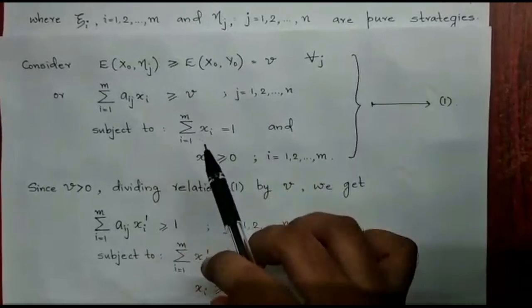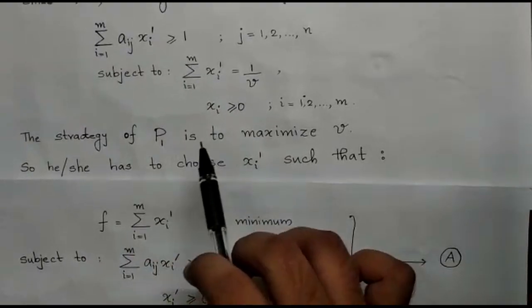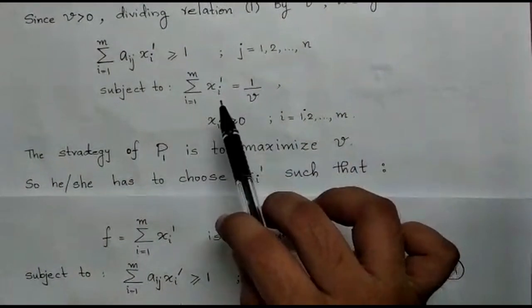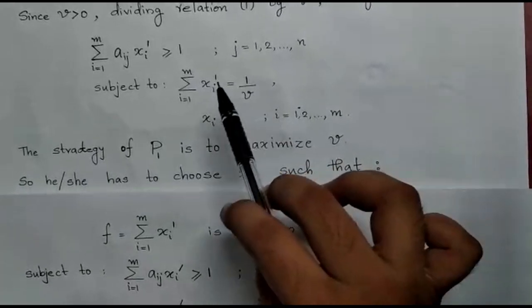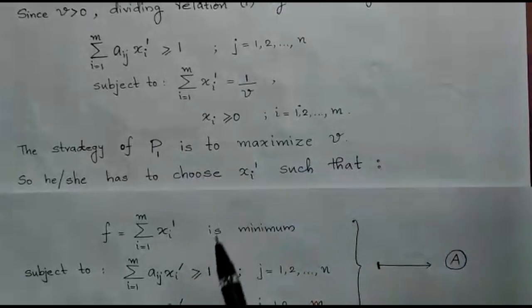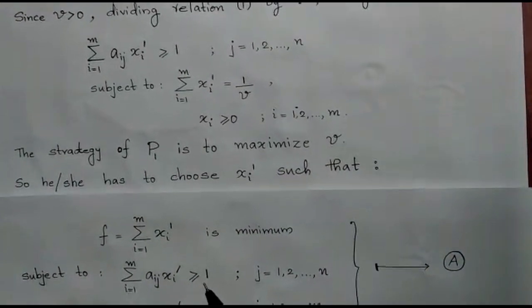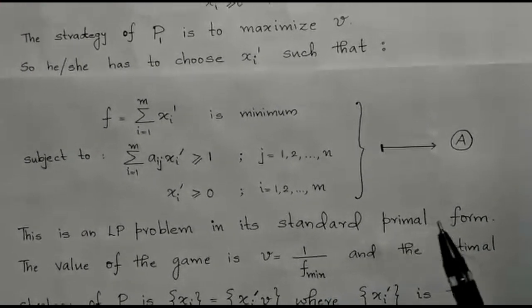Subject to summation i equal to 1 to M of Aij Xi greater than or equal to 0. The strategy of P1 is to maximize the value. So he or she has to choose Xi prime such that summation i equal to 1 to M of Xi prime is minimum, because summation i equal to 1 to M of Xi prime is 1 by V. One has to maximize V, so it is equivalent to minimizing 1 by V. That is, one has to minimize summation i equal to 1 to M of Xi prime, subject to summation i equal to 1 to M of Xi prime into Aij greater than or equal to 1, for J equal to 1 to N, and Xi prime greater than or equal to 0, for i equal to 1 to M. This is an LP problem in its standard primal form.